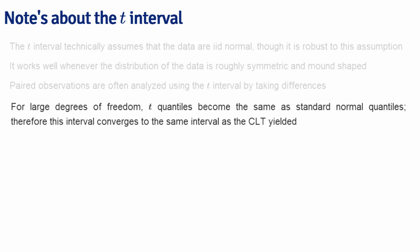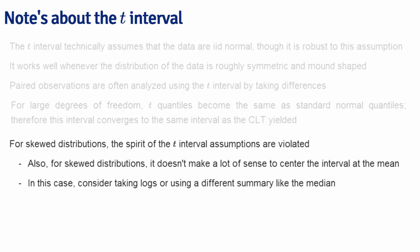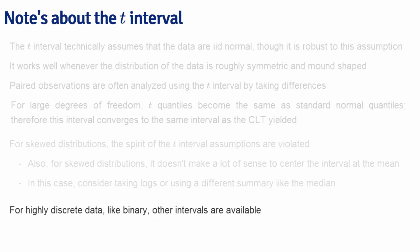Because of this, instead of picking between the t-interval and the normal interval, I always say just use the t-interval. For distributions that are skewed, the spirit of the t-interval assumptions are violated. You could either work on the data on the log scale, where logging will often take care of the skewness, or you can use other procedures such as bootstrap confidence intervals. It simply doesn't make sense to use the t-interval for skewed distributions because in a lot of ways it doesn't make sense to center intervals for skewed distributions at the mean. Also, for highly discrete data like binary or Poisson data, other intervals are available and it's probably preferable to use them over the t-interval.